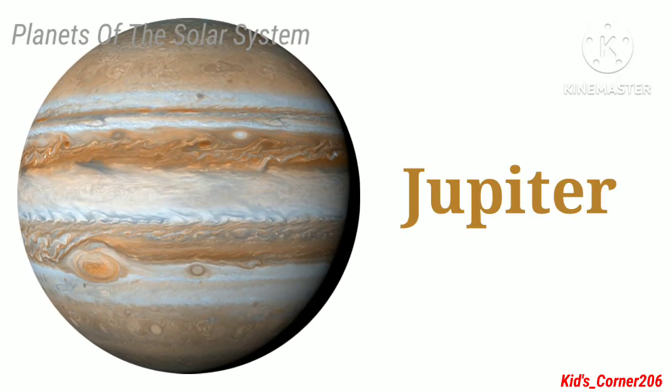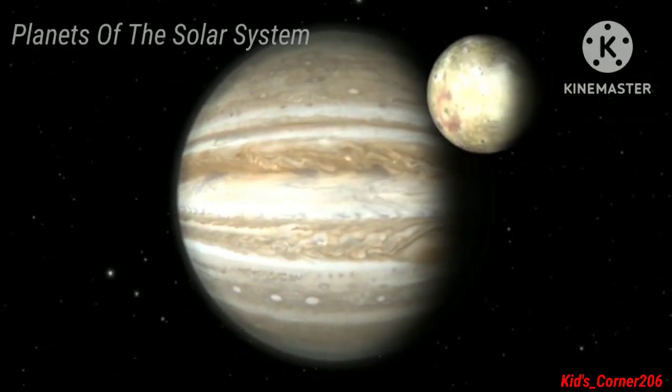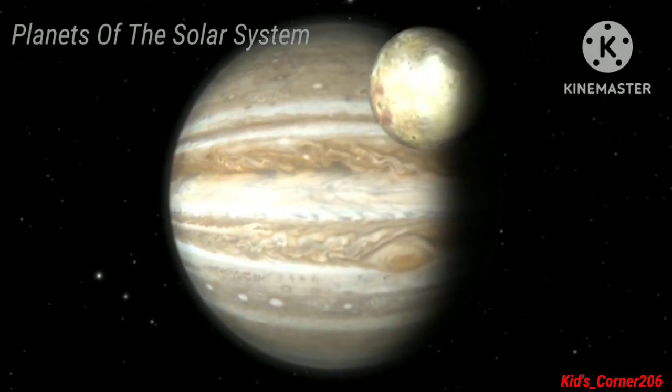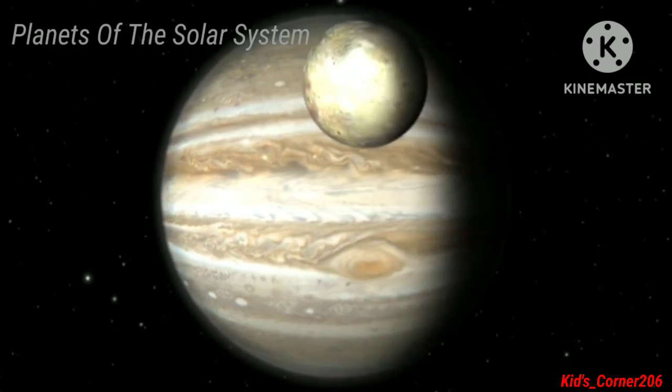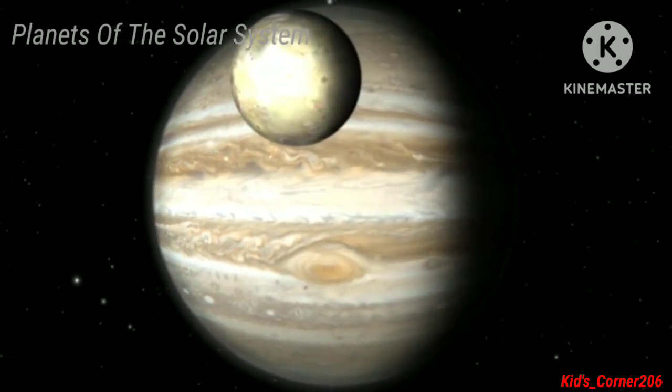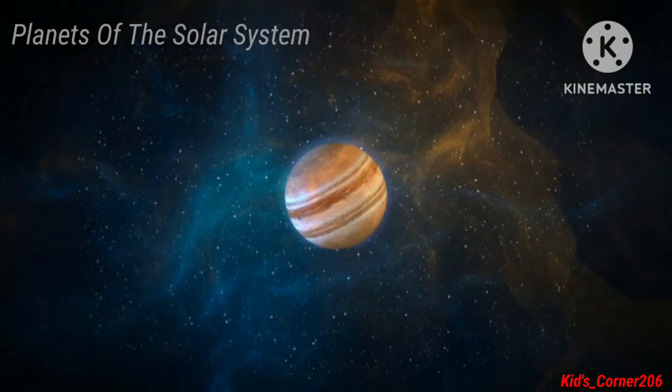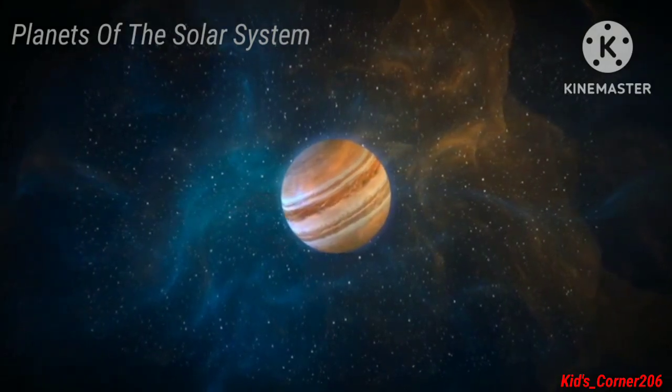The fourth planet of the solar system is Jupiter. Jupiter is so large that it can occupy nearly 1300 Earths inside it. The largest planet of the solar system is Jupiter.